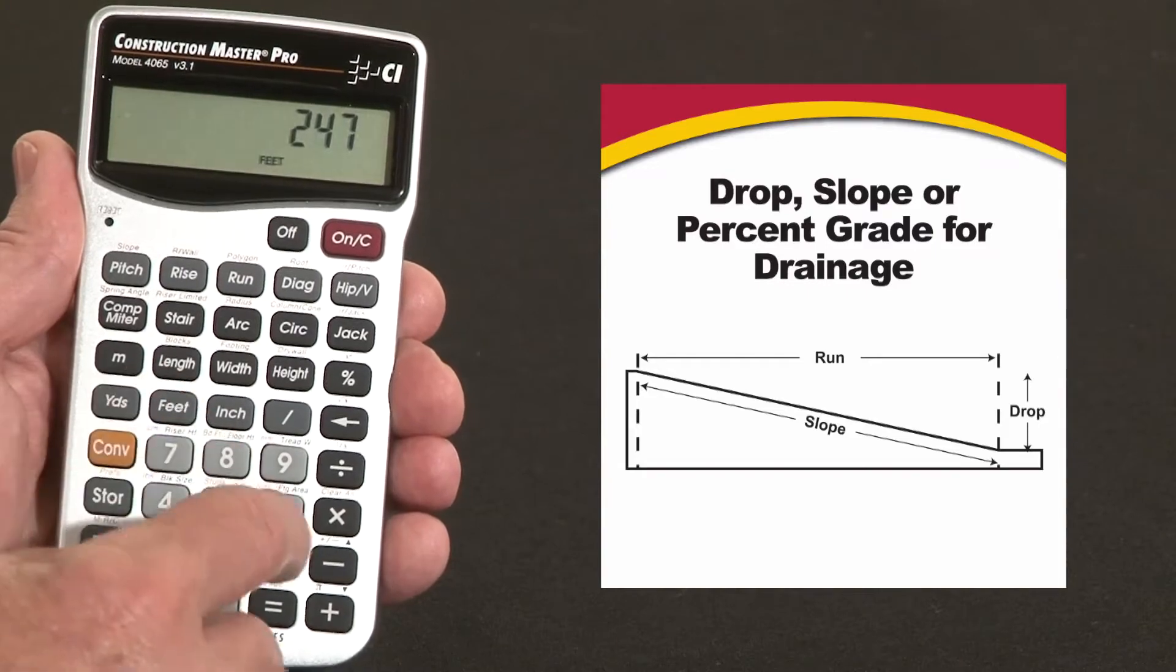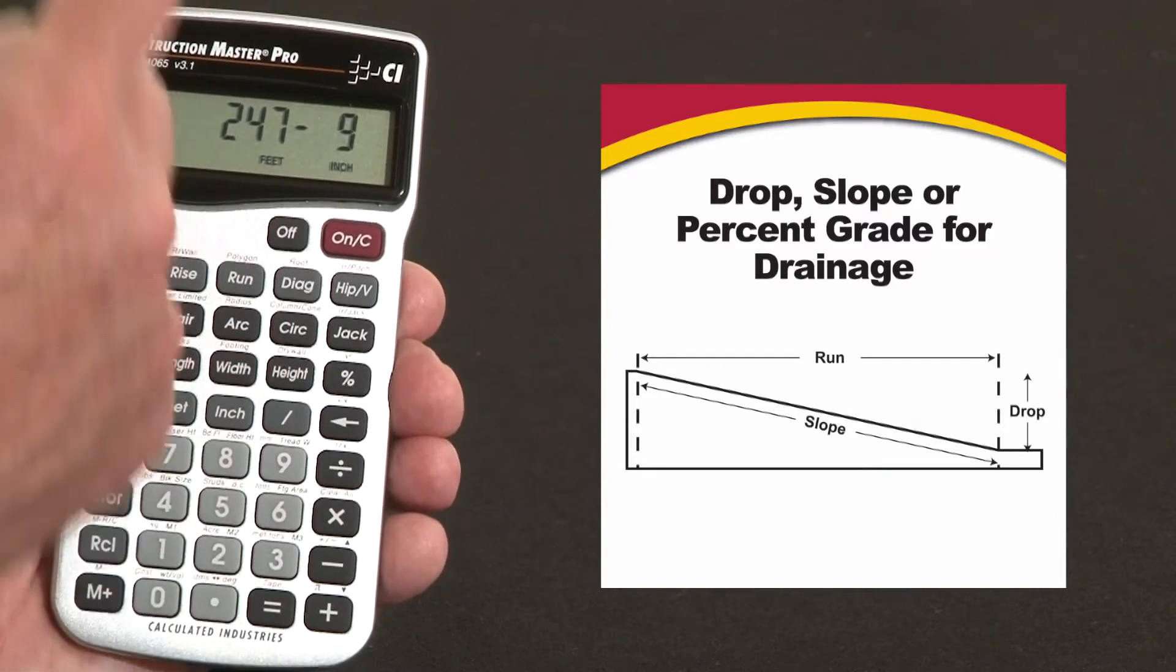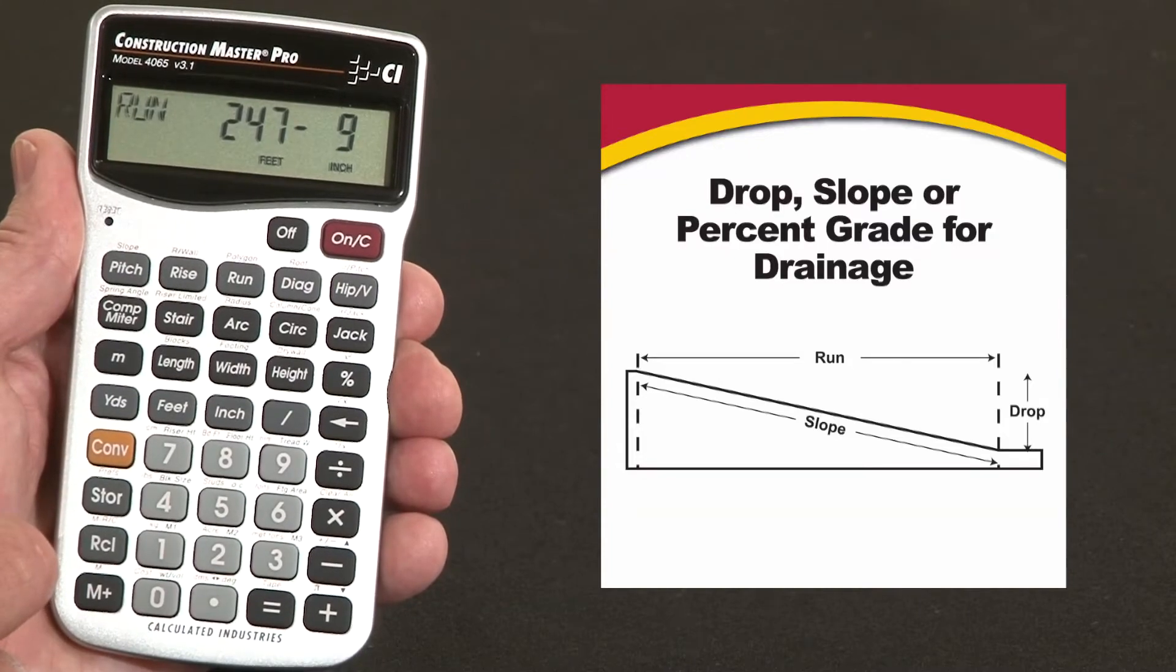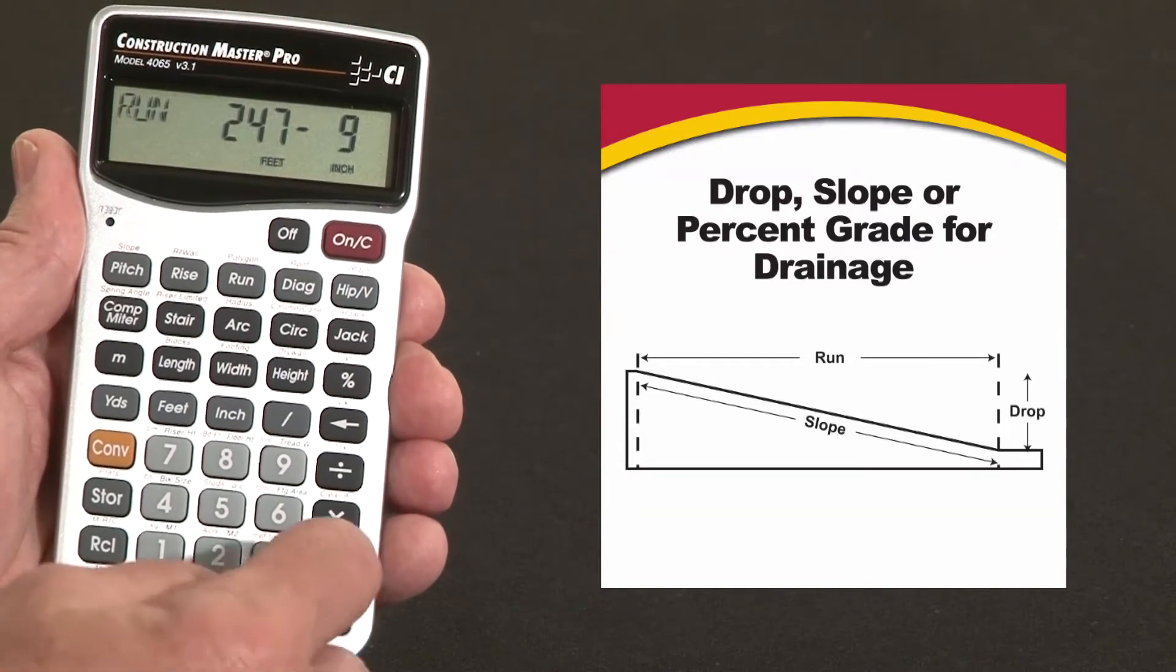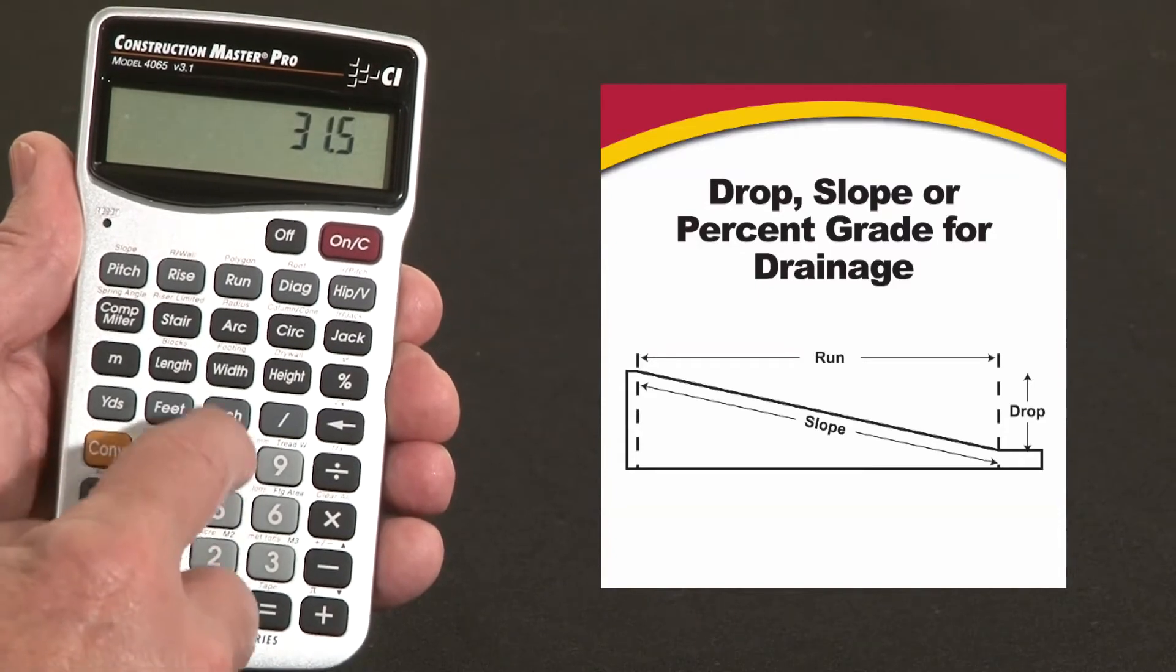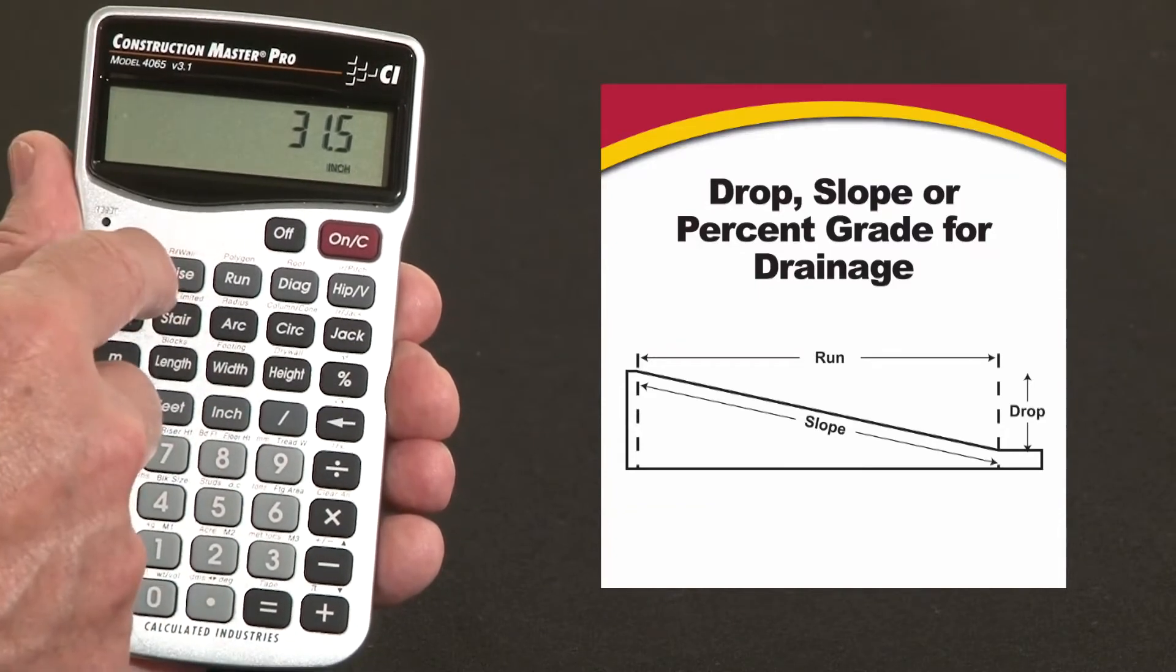Say it's 247 feet 9 inches across - we'll call that the run. You've taken a shot with your level and find that it's 31.5 inches lower at the far end of the lot than at this end. 31.5 inches is our vertical change or rise.